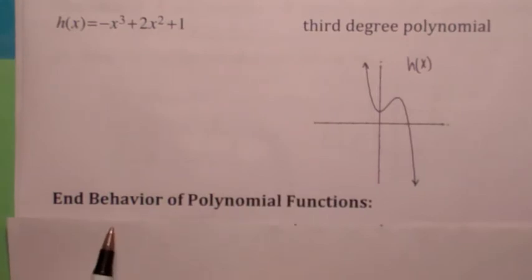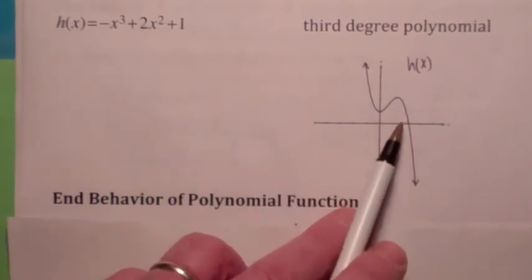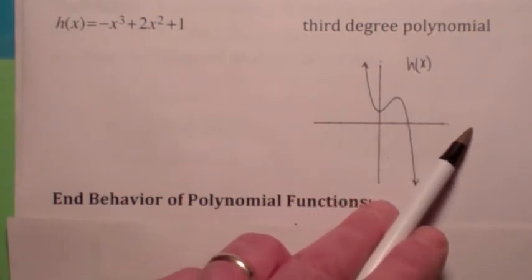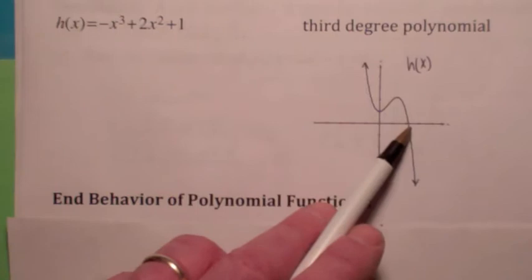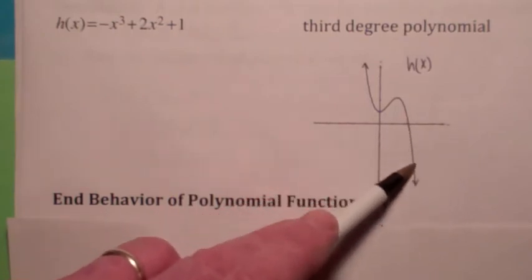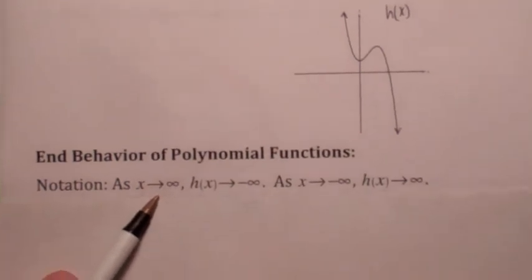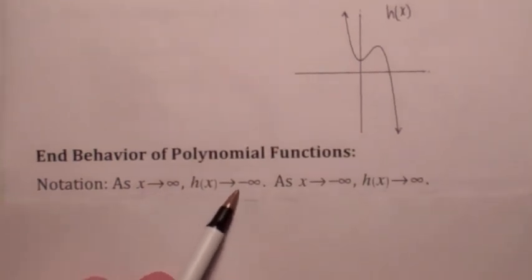So what we have to do is look for characteristics of polynomial functions in general, one of which is the end behavior. The end behavior, we're asking the question, what is happening to the graph, or specifically the y coordinates, as x gets very large, which means x goes to infinity. In this case, if x goes to infinity, the y values are going down to negative infinity. So we say, as x goes to infinity, for this particular function, h of x goes to negative infinity.